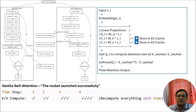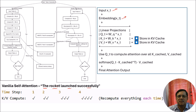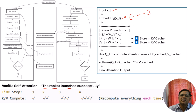In the traditional vanilla self-attention, what we do is we first take the input text and after that we calculate the embeddings. Suppose we have a 4-word text: 'the rocket launched successfully'. For each word, and for simplicity we are considering each word like a token, we will calculate the embeddings for each of those words.